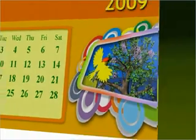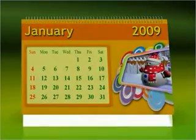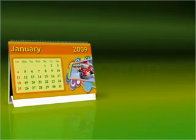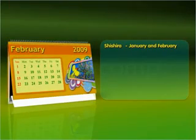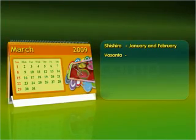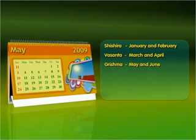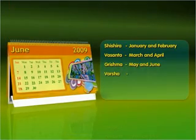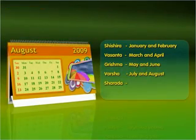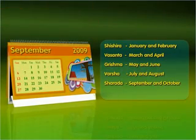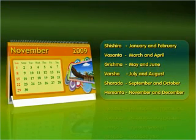According to the Indian calendar, a year is divided into six seasons: Shishira (January–February), Vasanta (March–April), Grishma (May–June), Varsha (July–August), Sharad (September–October), and Hemanta (November–December).